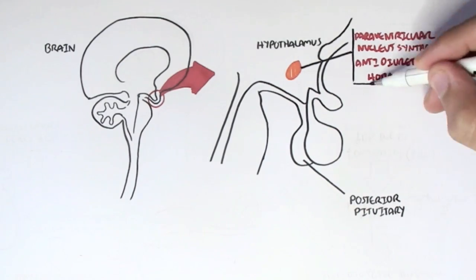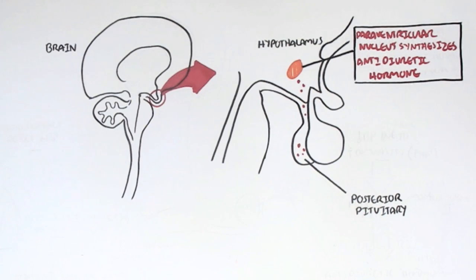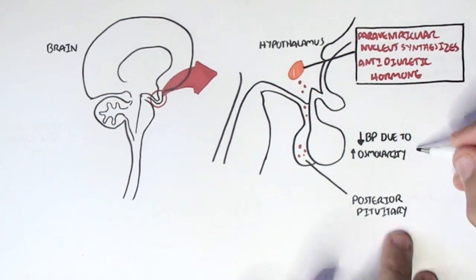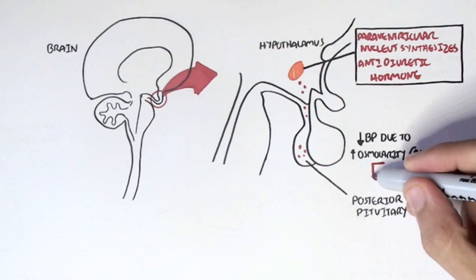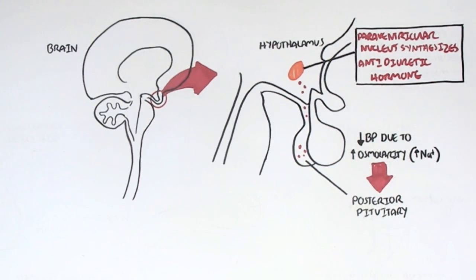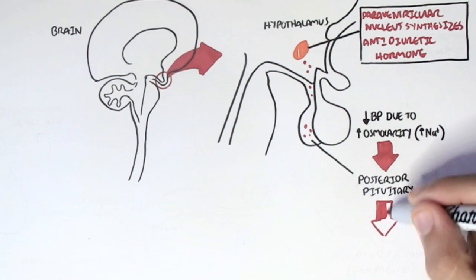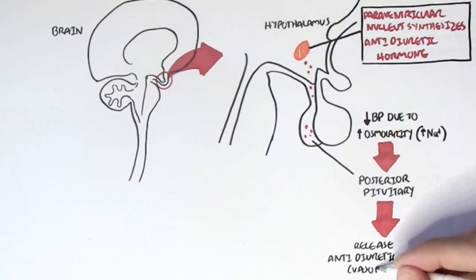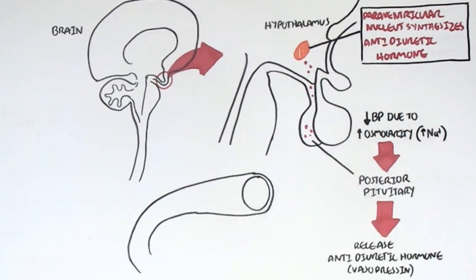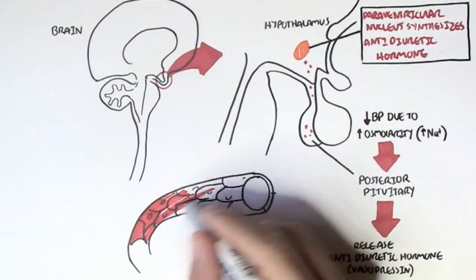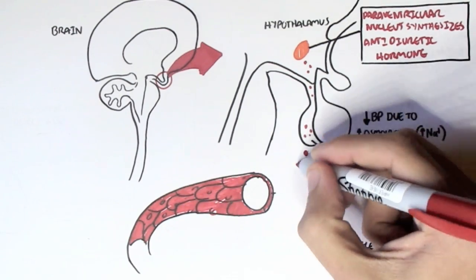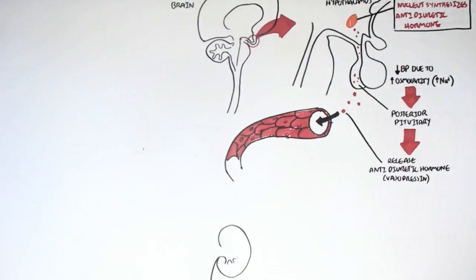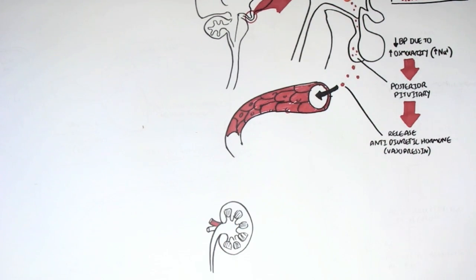From there, antidiuretic hormone gets stored within the posterior pituitary. When the osmoreceptors in the hypothalamus detect low blood pressure due to an increase in osmolarity or an increase in sodium concentration, this will cause the hypothalamus to stimulate the posterior pituitary to secrete antidiuretic hormone, also known as vasopressin. It will then be secreted into the bloodstream and travel around the body to target specific tissues, particularly the kidneys.